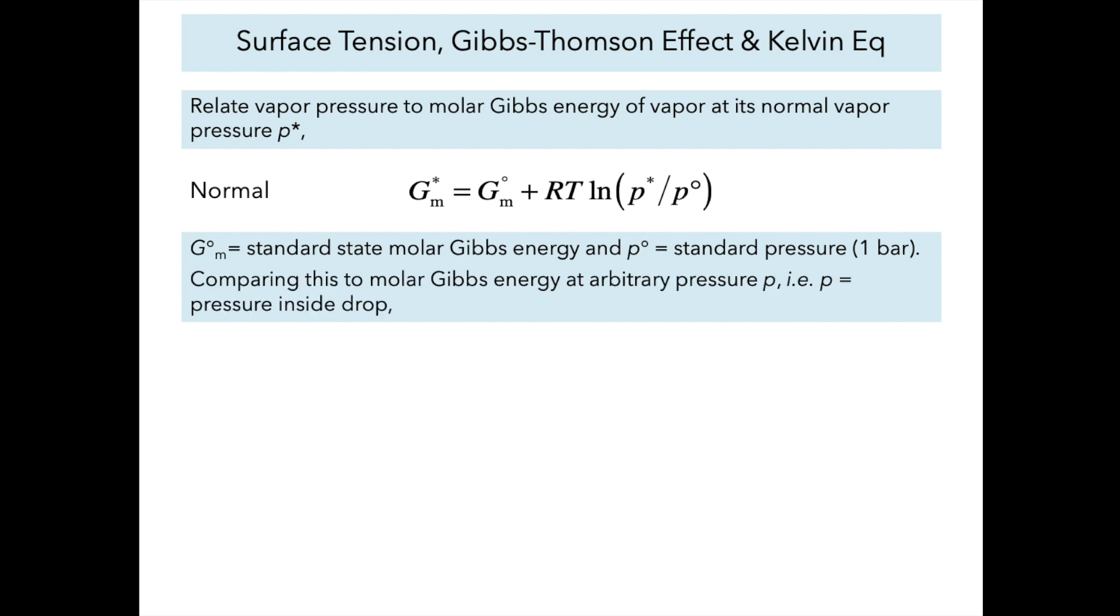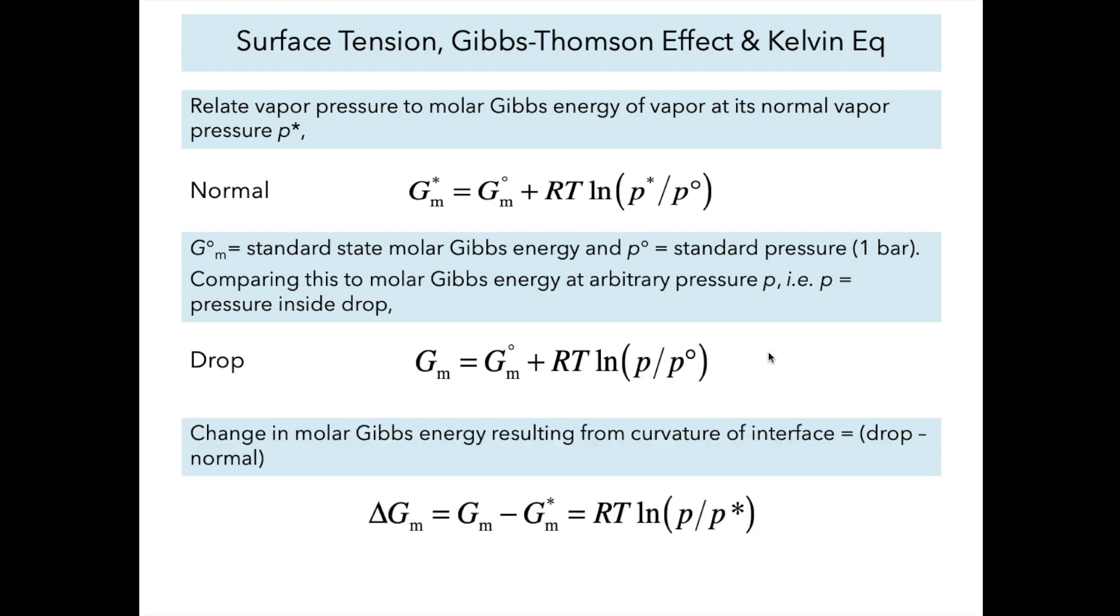Now let's compare this to the molar Gibbs energy at some arbitrary pressure, the pressure inside our little drop, p. In a drop, the molar Gibbs energy is again equal to G naught plus RT ln(p/p°), p being the vapor pressure inside the drop. The change brought about by forming this curved interface is ΔG = RT ln(p/p*), the vapor pressure inside the drop divided by the normal vapor pressure behind a flat interface.